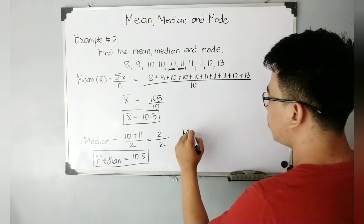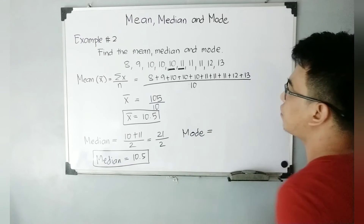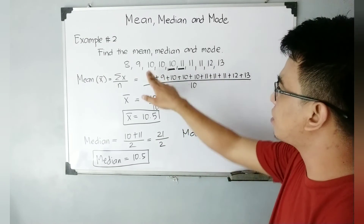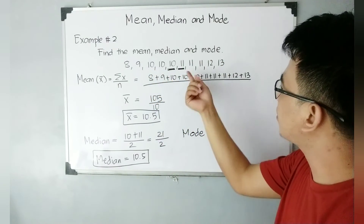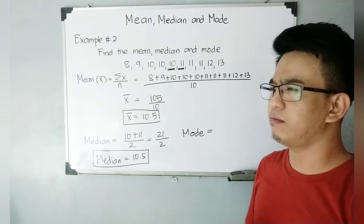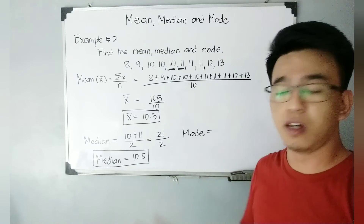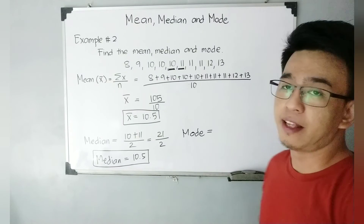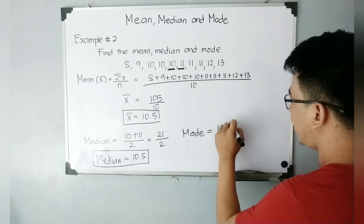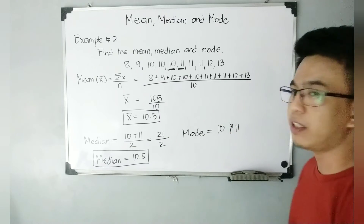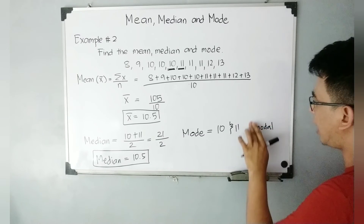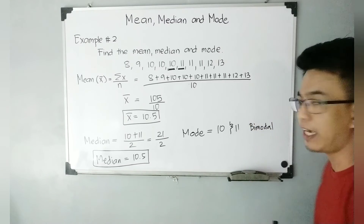Now let's have the mode. Looking at the arrangement of this dataset, the number 10 occurs three times, and 11 also occurs three times. Since both occur equally often as the most frequent values, we choose two modes: 10 and 11. This is called bimodal — when you have two modes, it is called bimodal.